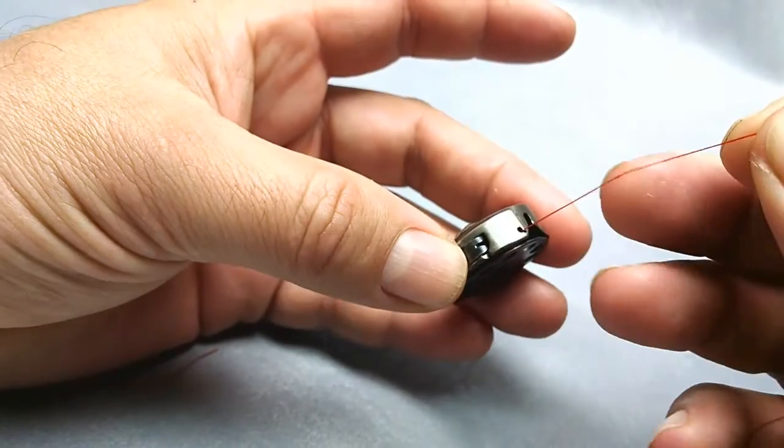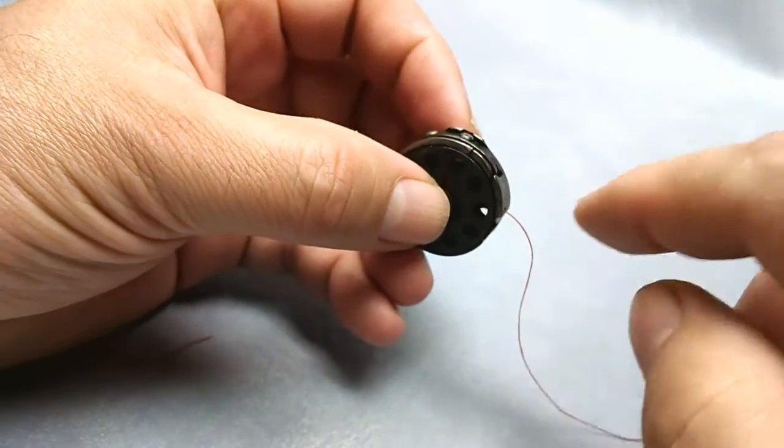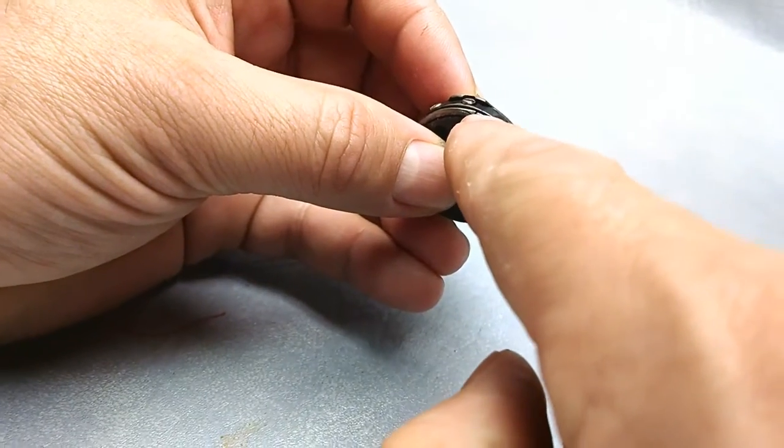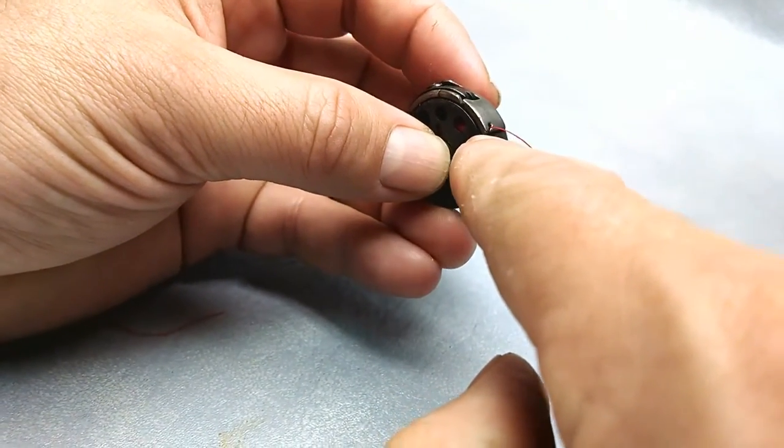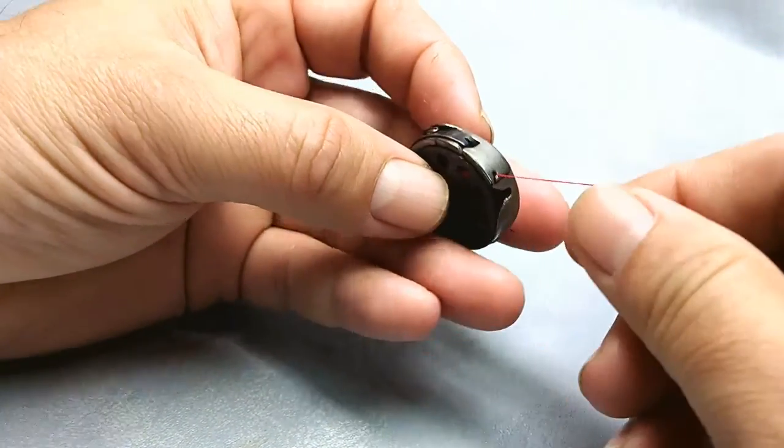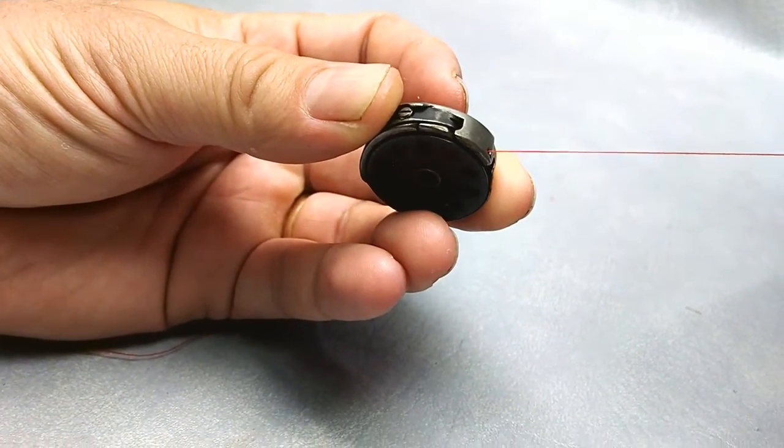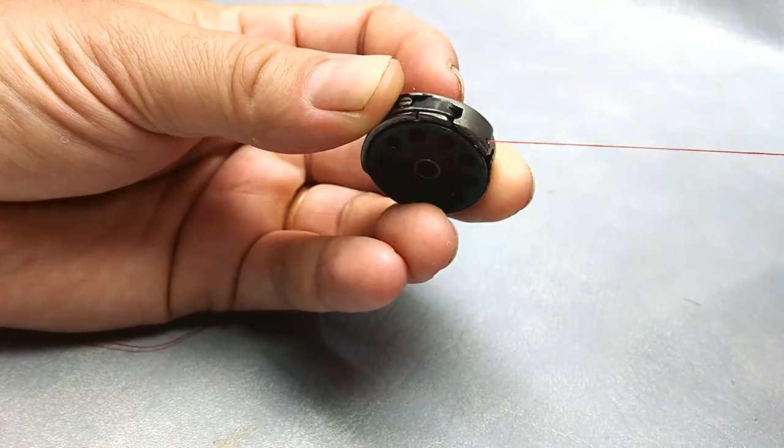If you don't do it right, it's not going to sew. So you start off in this cut, go under the spring, go back under in this cut, and come up through that hole. Then you've got the proper threading for that bobbin.